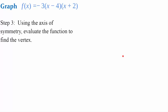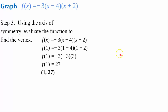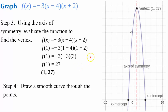Step 3: use that axis of symmetry to evaluate the function to find the vertex. We take our function and input x equals 1 — our axis of symmetry value — and evaluate it, getting an output of 27, giving a vertex of (1, 27). Step 4: draw a smooth curve through the vertex and the two roots.